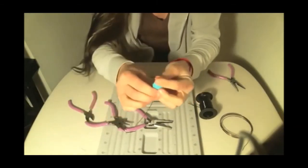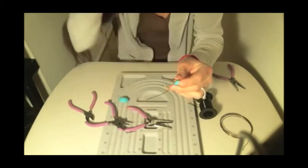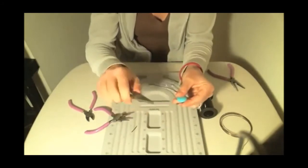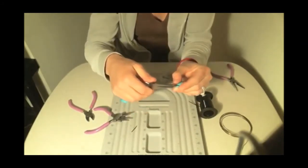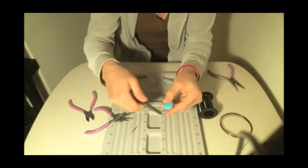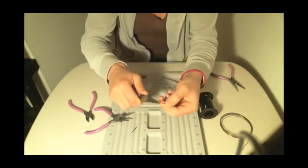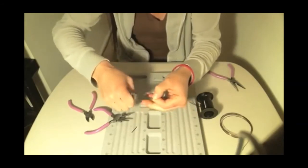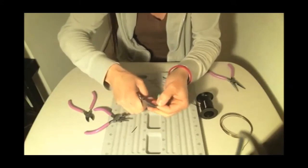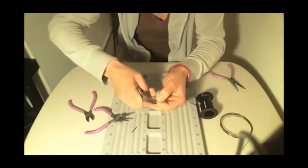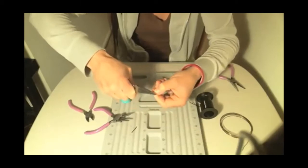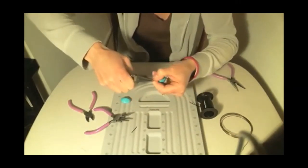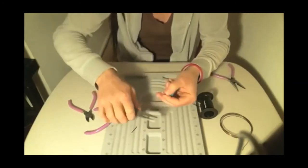And then to make the spiral we're going to take our flat nose pliers and we're going to grip the loop that we just made, and we're just going to kind of push the wire up and around the loop. And if you can see it kind of spirals out.